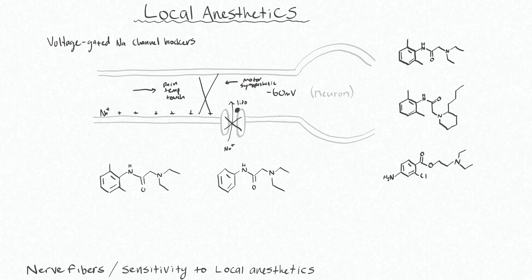Here are a couple of local anesthetic molecules. This one is lidocaine. The basic structure common to all of these is a benzene ring, which is technically lipid soluble, and then there's an amine group. These are connected together by some type of bond — in this case, it's an amide bond. Local anesthetics are either amides or esters based on what this linkage is. This one has a nitrogen group, therefore it's the amide bond.